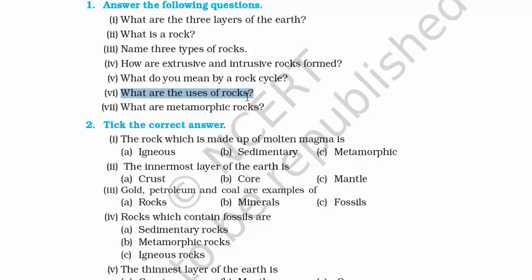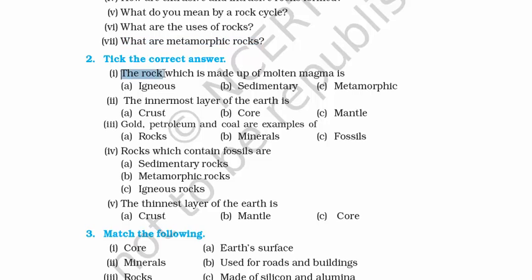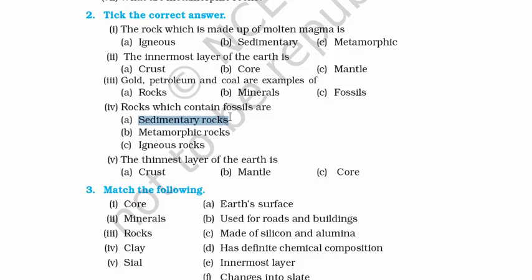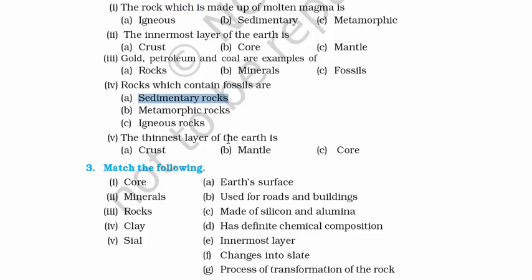Sixth question: What are the uses of rocks? Rocks are used to build roadways, buildings, etc. Seventh question: What are metamorphic rocks? Metamorphic rocks are the transformation of sedimentary and igneous rock under high heat and pressure. Now for the MCQs: The rock made up of molten magma is igneous — remember the volcano example, which is granite. The innermost layer of the earth is the core. Gold, petroleum, and coal are examples of minerals. Rocks which contain fossils are sedimentary — made of compressed sand with fossils of plants and animals in between layers. The thinnest layer of the earth is the crust, which is 35 kilometers deep; the mantle is 2900 km and the core is 3500 km.